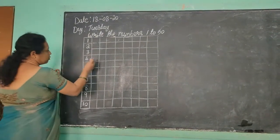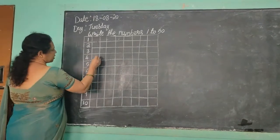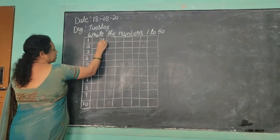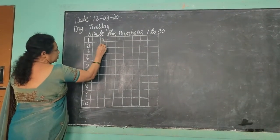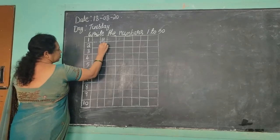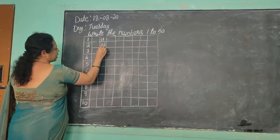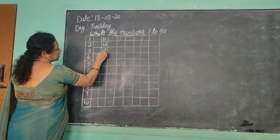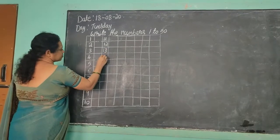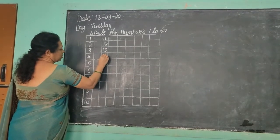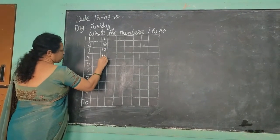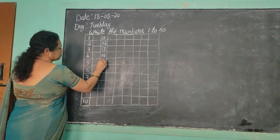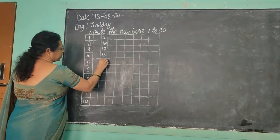Now view one box and write. 1, 1 — 11. 1, 2 — 12. 1, 3 — 13. 1, 4 — 14. 1, 5 — 15.